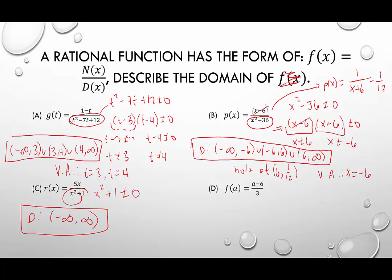That means this will be a continuous graph with no breaks. And in letter d, the denominator is just 3 — 3 can't be 0, so again there are no restrictions. The domain is from negative infinity to infinity. If you distribute the denominator of 3, you get a over 3 minus 6 over 3, which is 2 — that's actually just a linear equation, so letter d is just a straight line.